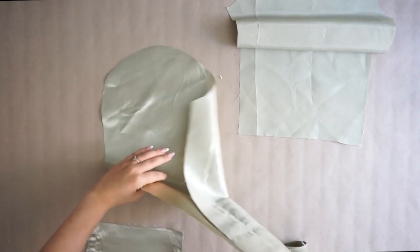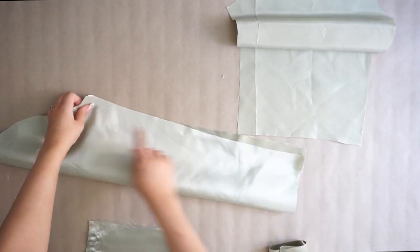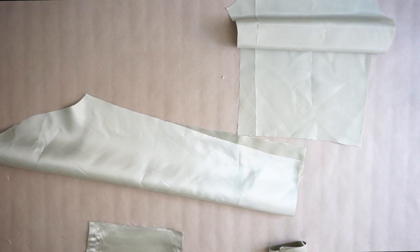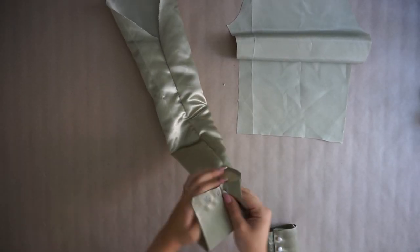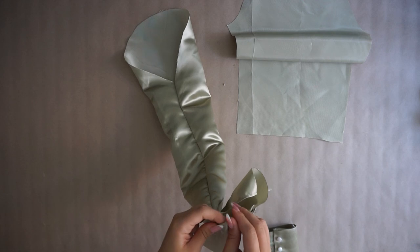Then I'm taking my sleeve, folding it in half, and sewing the sides. You're going to connect the cuffs with the sleeves and you can create little ruchings as well.